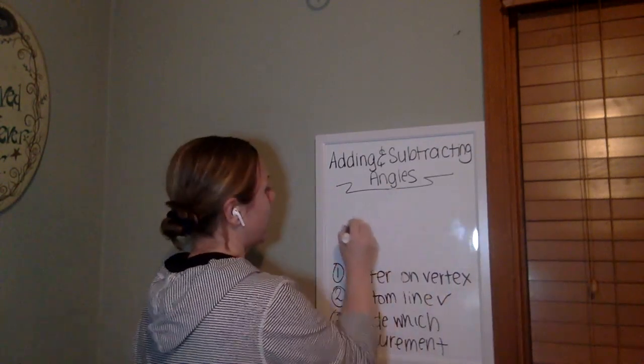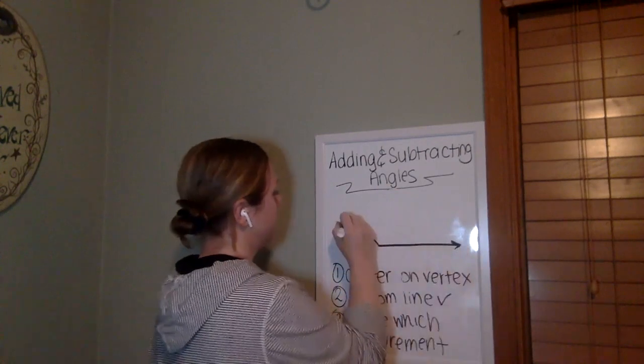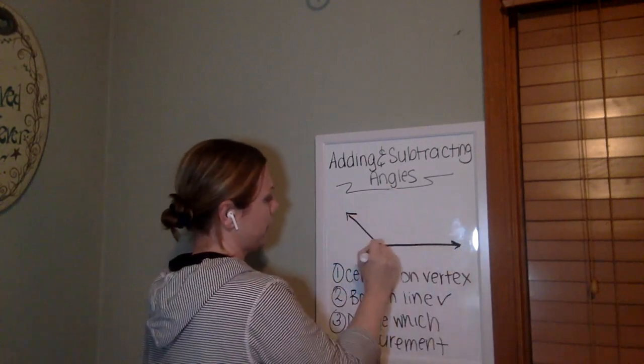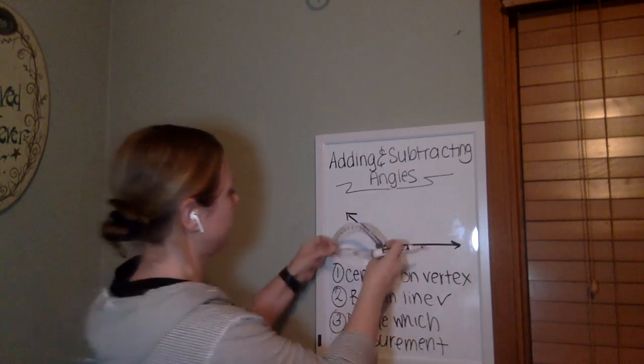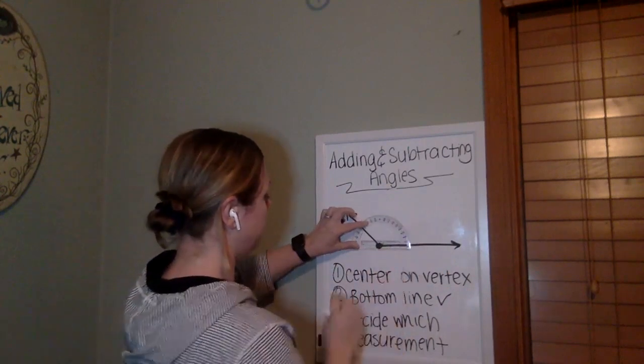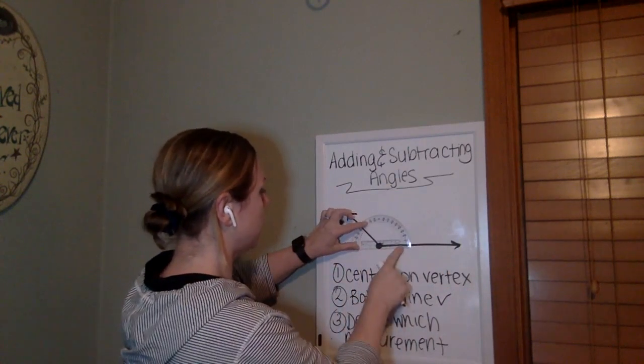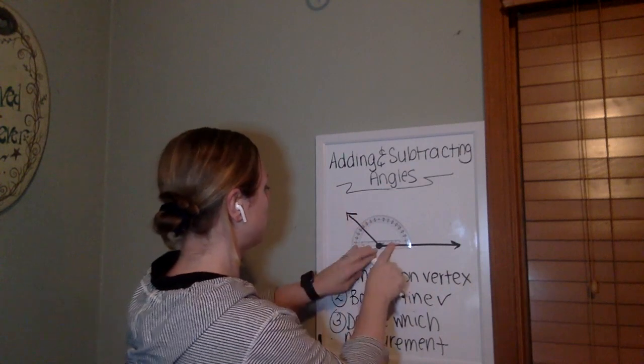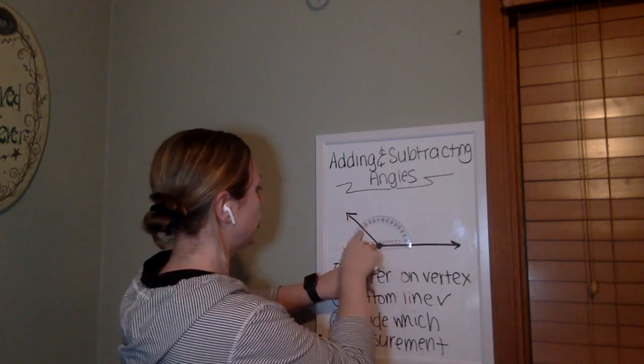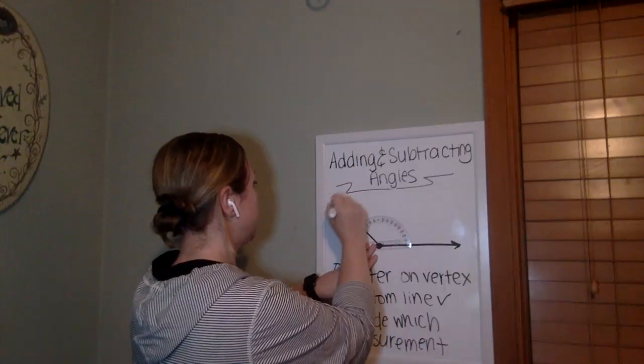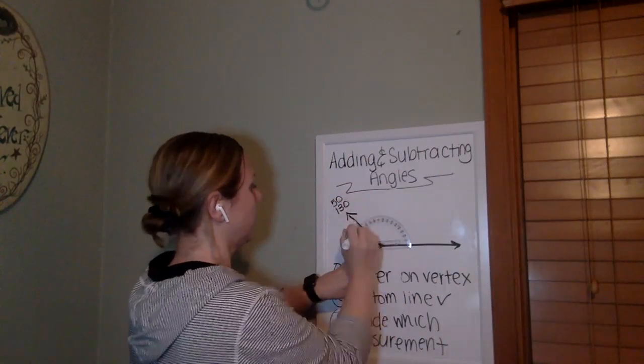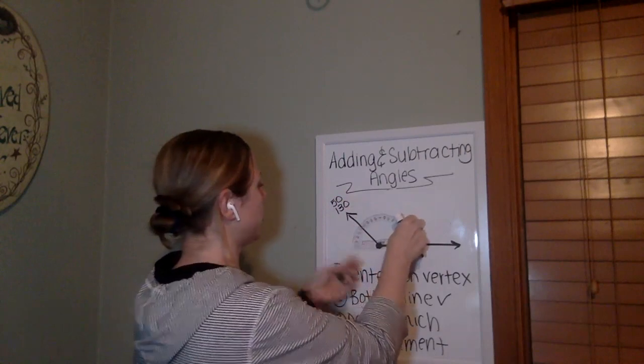Now, if I have an obtuse angle, here's my vertex center on vertex. Here I am. Bottom line check. I'm going to straighten that out a little bit to make sure. And then I'm going to look over here and this is giving me either 50 or 130. Those are the two numbers that are on top of each other.